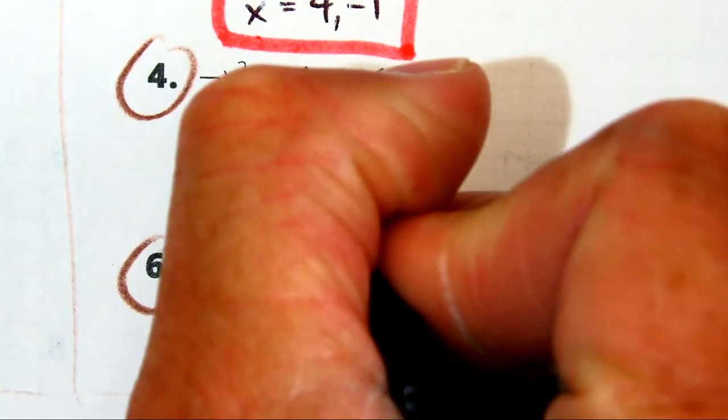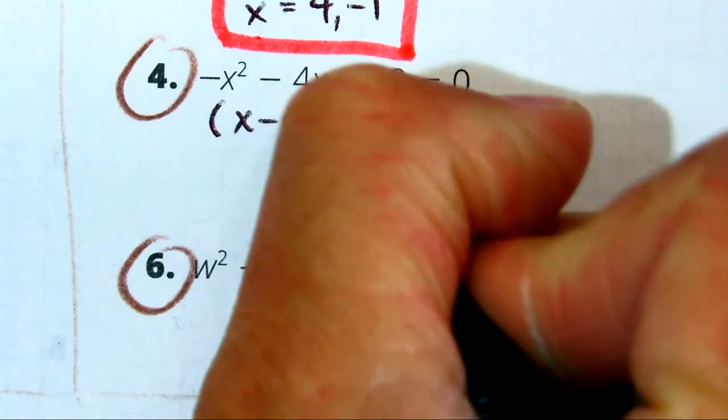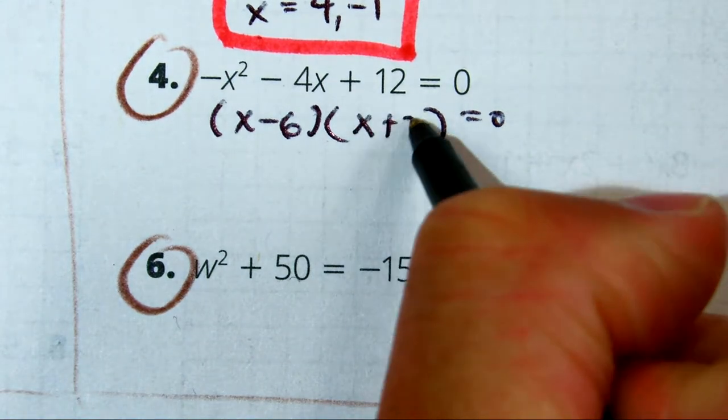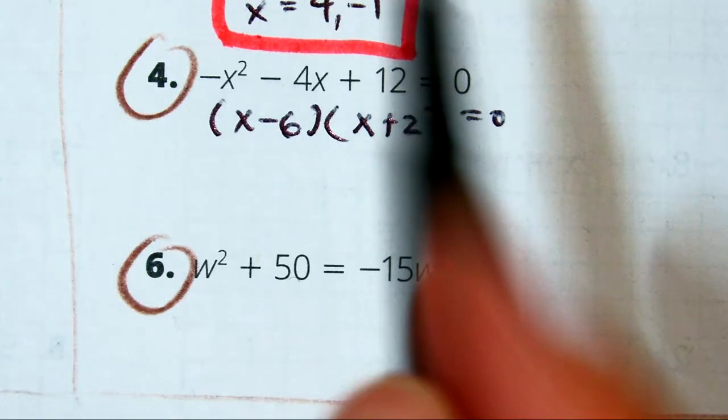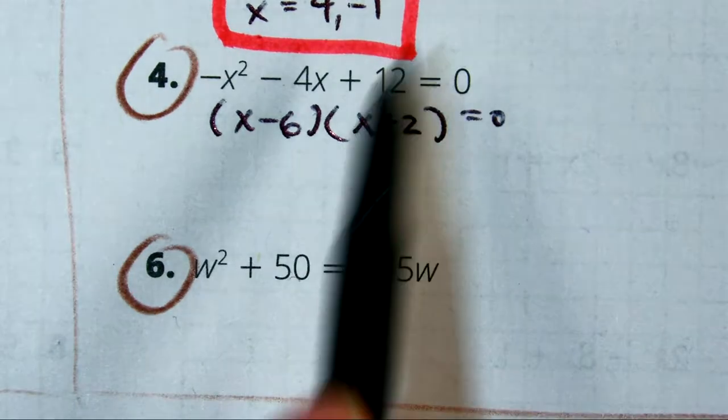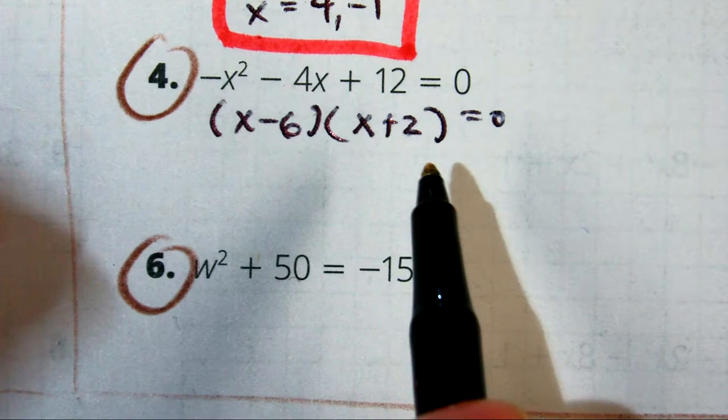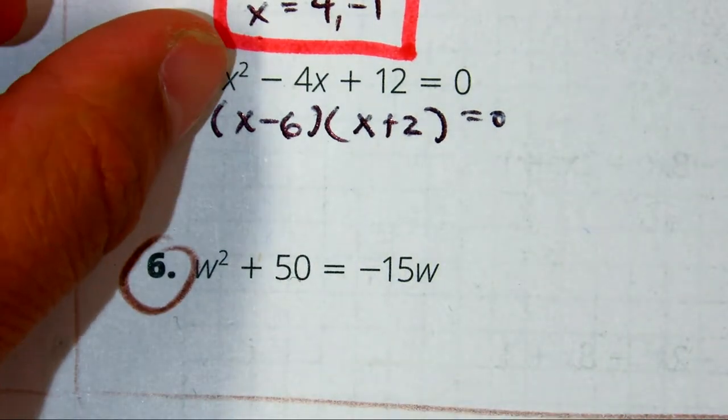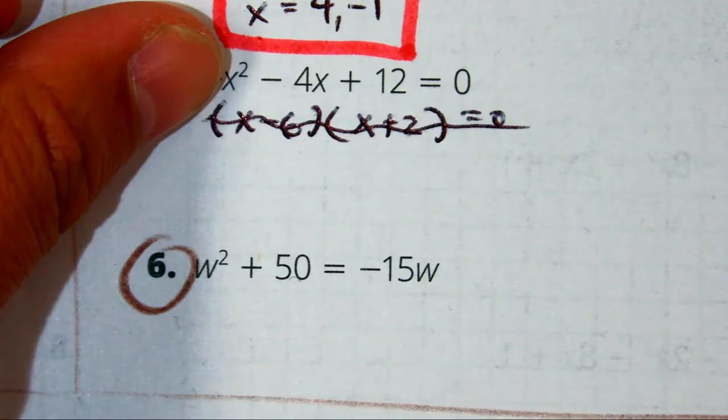Got x minus 6. Can I stop you there for a second? Yeah. So, these numbers, negative 6 and 2, would work if I put my finger over the negative sign.